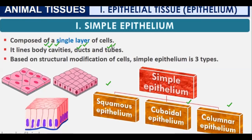Simple epithelium acts as lamination — it lines and covers our body. Based on the structural modification of cells, the three types differ: square-shaped cells form squamous epithelium, cube-shaped cells form cuboidal epithelium, and long pillar-like cells form columnar epithelium, as visible in diagrams.